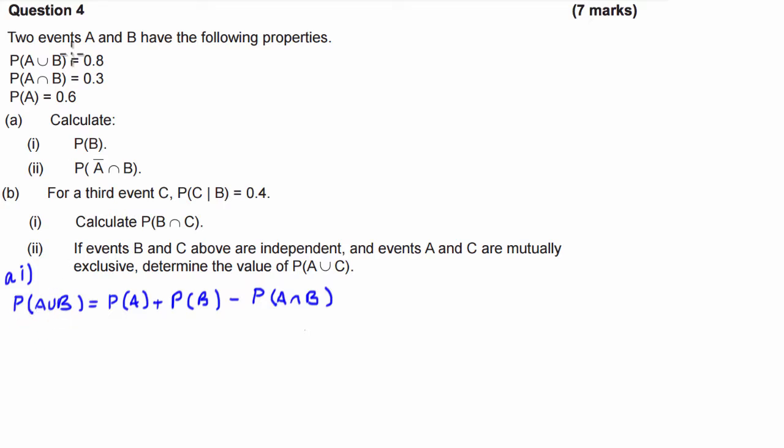So probability of A union B is 0.8. The probability of A is 0.6. We don't know the probability of B, so let's just write down the probability of event B occurring minus the probability of A and B is 0.3.